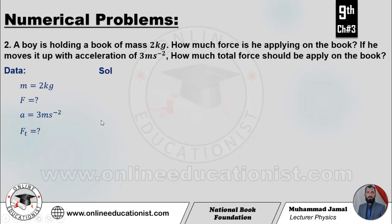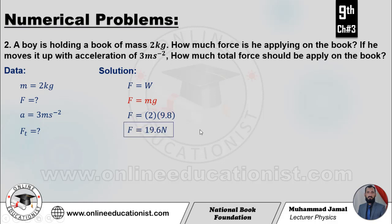Solution dekhte hain. Jo force apply kar raha hai book pe, utna uska mass hai. Is mass ki madad se agar hum weight calculate kar lete hain toh wo is force ki equal aayegi. Yaniki F equal hogi uske weight ke, F equal aa jaayega mg. Values put karenge: mass given hai, g ki value 9.8 hoti hai. Toh yeh force ho jaati hai 19.6 newton.